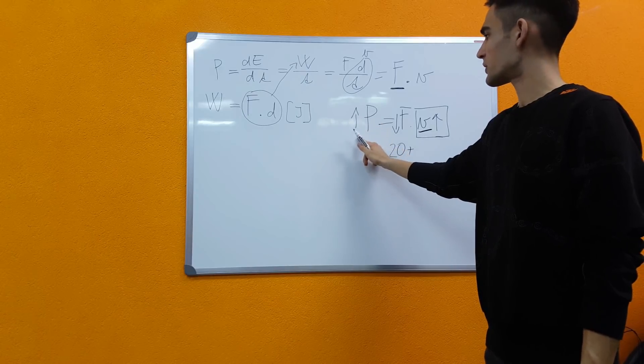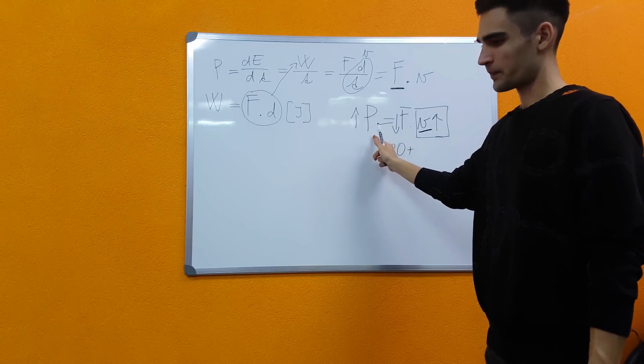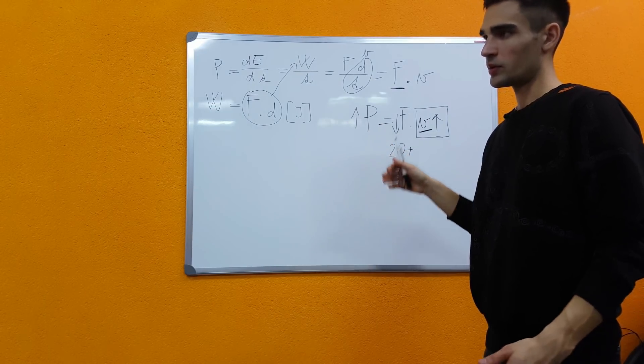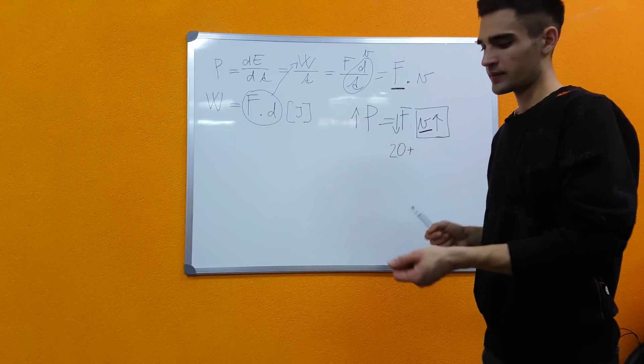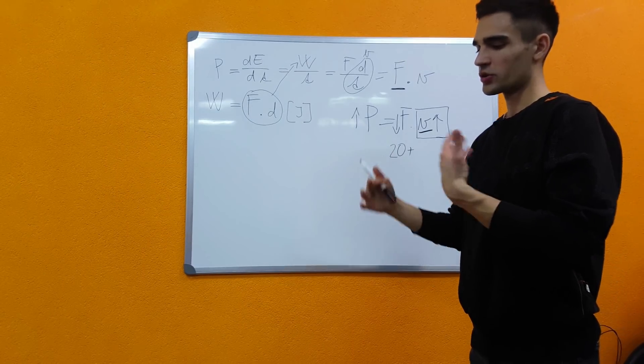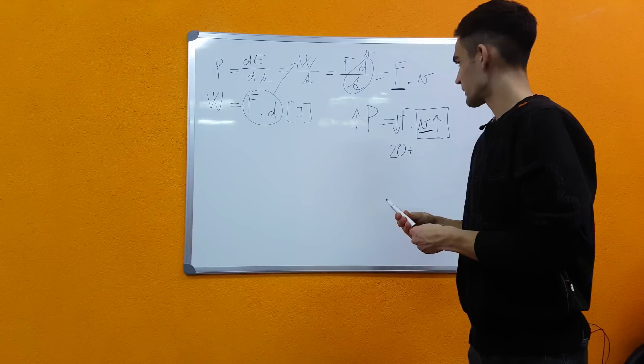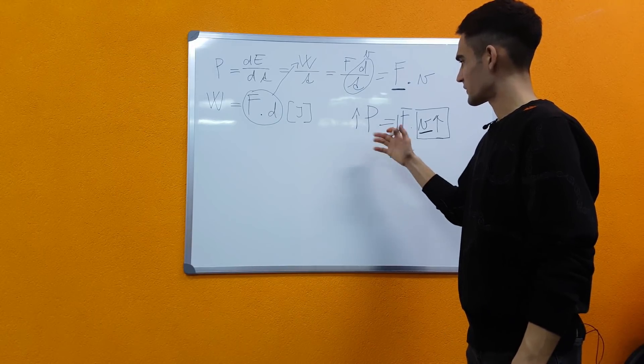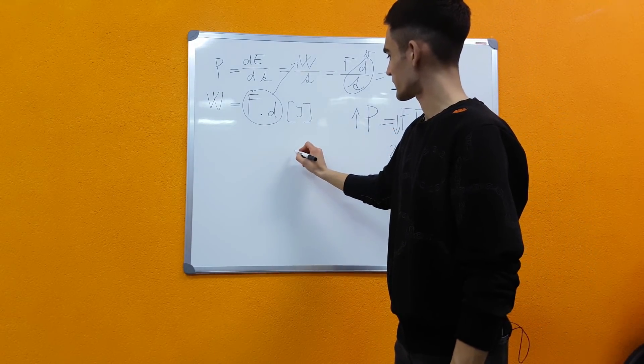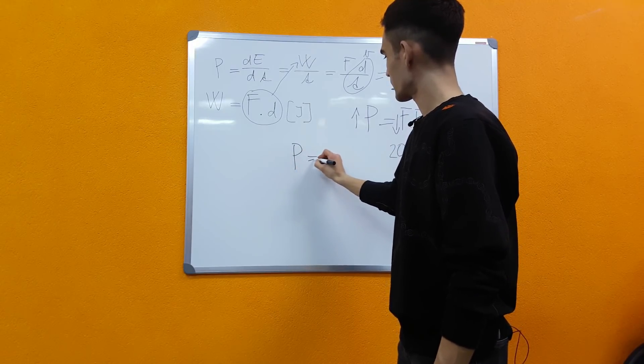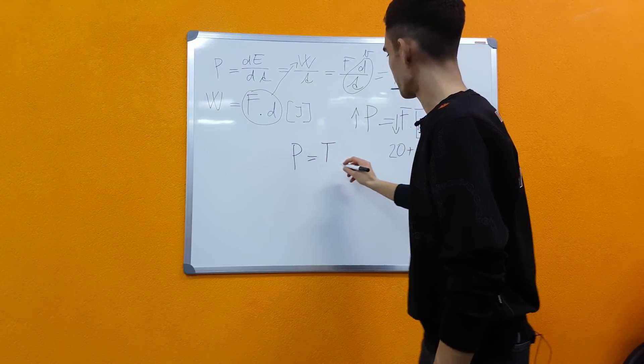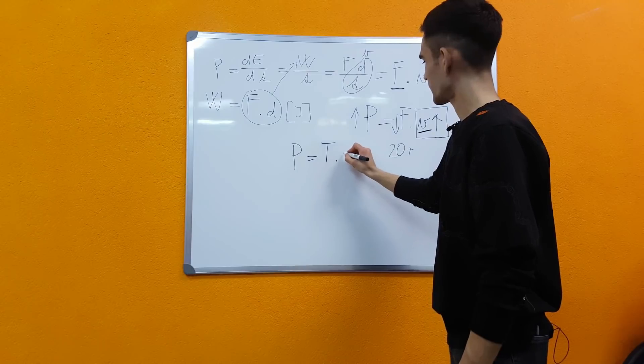So now we know this. How do we get the power that we produce on the bike? On the bike we push down on the pedals and that creates a rotational motion of the cranks. Now power converted to a rotational motion is torque times angular velocity, omega.